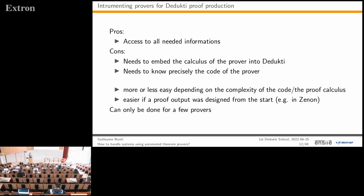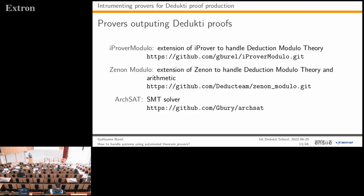It is easier if the prover was designed from the start to support proof output—which is the case for Zenon, developed with the idea of producing Coq proofs and now able to produce proofs for many other formats. Because of these constraints, it is not reasonable to do this for every prover, but it has been done for at least three: iProver Modulo, Zenon Modulo, and ArchSAT, all capable of producing Dedukti and/or lambda-pi proofs.